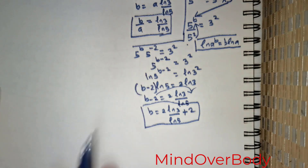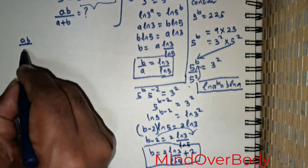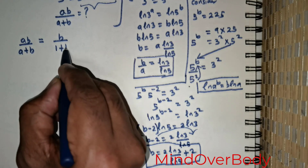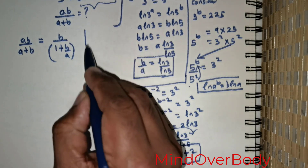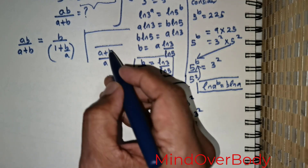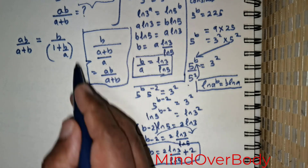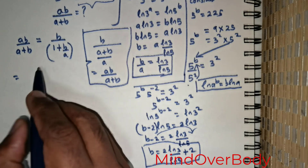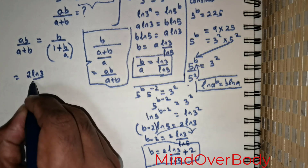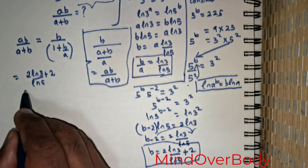We are asked to evaluate ab over a plus b. I rewrite this as b divided by (1 plus b/a). Substituting the value of b, which is 2·ln3 over ln5 plus 2, and b/a equals ln3 over ln5, we substitute these into the expression.